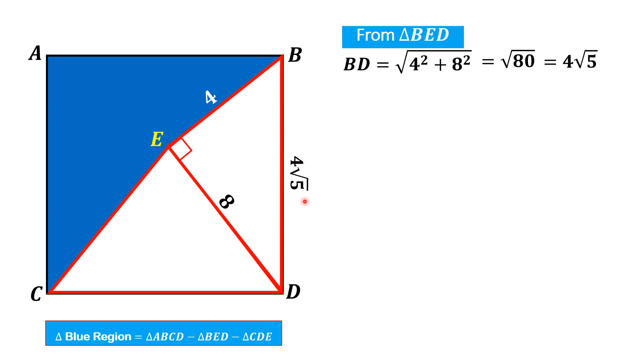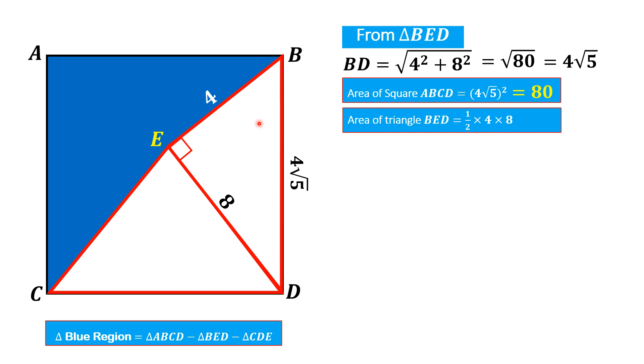From here we can easily find the area of this whole square ABCD. So area of square ABCD will be the square of its side, that is 4 times square root of 5, which equals 80 square units. Now from triangle BED we can easily find the area of this triangle, that is half times 4 times 8, which equals 16 square units.